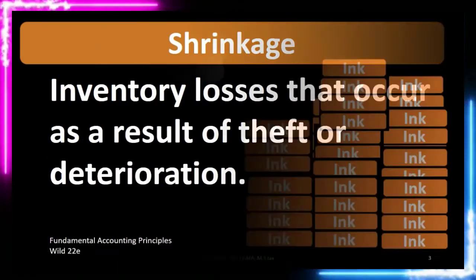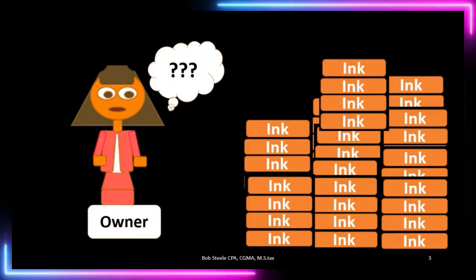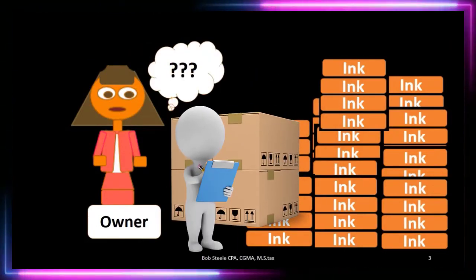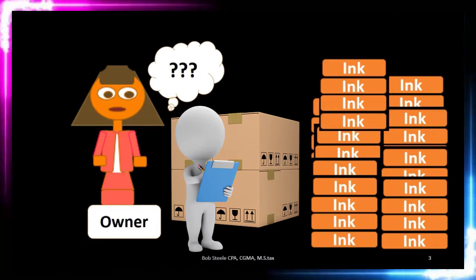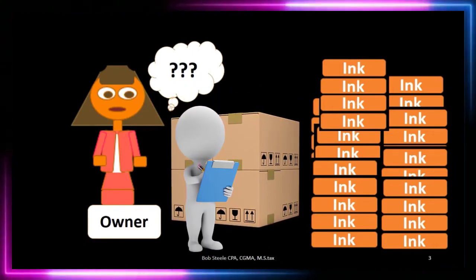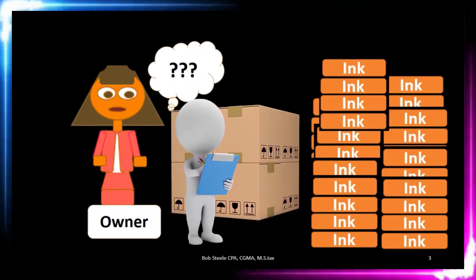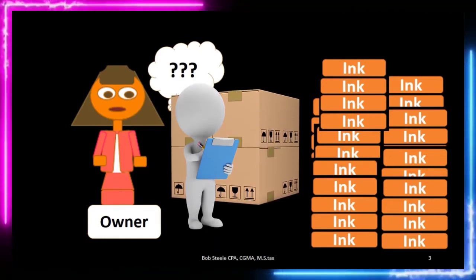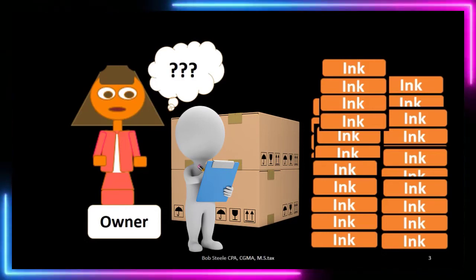Usually we will find that out whether we are on a perpetual inventory system or a periodic inventory system through a physical count. So we'll physically count the inventory, we'll see what is left, and we'll do some type of comparison to see if that's what we think should be left, which may be easier on a perpetual inventory system where we're keeping perpetual records of what should be in ending inventory.